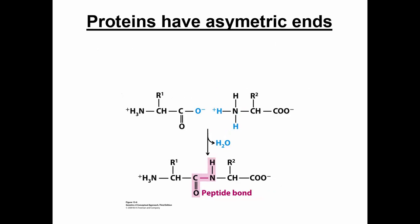Proteins have asymmetric ends. One end is the amino group end and one end is the carboxyl group end. It's interesting too, because when we talk about post-translational modifications, some protein sequences are modified on the N-terminal end and some are modified on the C-terminal end. It's important that each end is modified respectively — we'll talk about that more at the end of this talk.